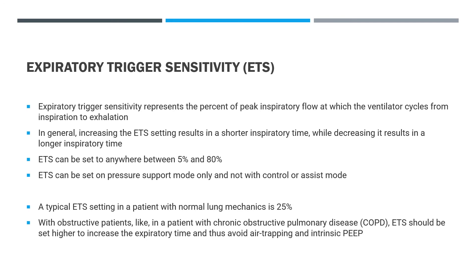We discussed inspiratory trigger. Now we will discuss expiratory trigger sensitivity. Expiratory trigger sensitivity represents the percent of peak inspiratory flow at which the ventilator cycles from inspiration to expiration. Expiratory trigger sensitivity can be set only on pressure support mode and not on assist control mode. An increase in expiratory trigger sensitivity, for example from 25% to 40%, results in a shorter inspiratory time.